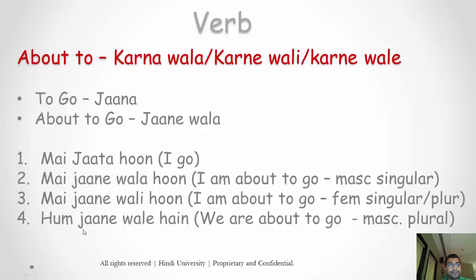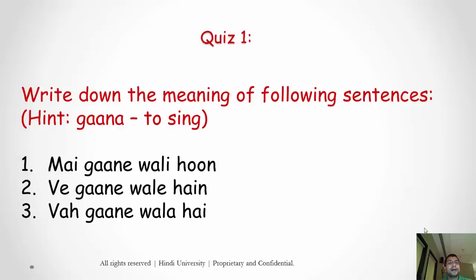'Hum jane wale hain' means we are about to go — masculine plural. Let's look at it again so it starts making sense. For today's quiz, I'm making it a little simpler to encourage participation. Your task is to write down the meaning of these sentences — I'll write them in Hindi and your task is to write the meaning in your native language.